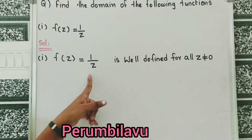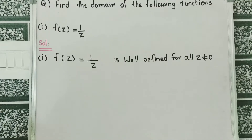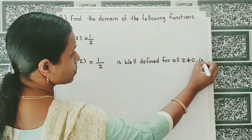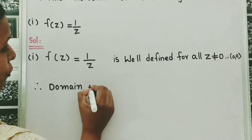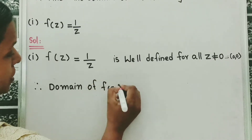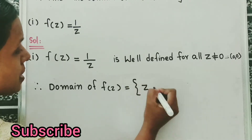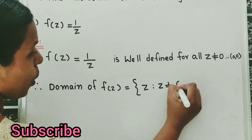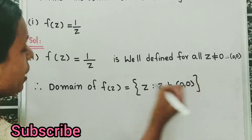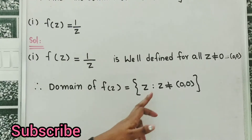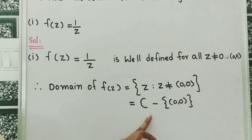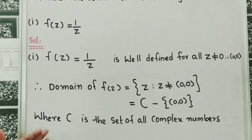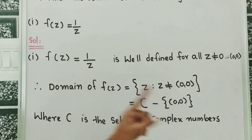If we put z equal to 0, we get 1 by 0, which is not defined. Here 0 is the ordered pair (0, 0). Therefore, the domain of f of z is equal to the set of z such that z is not equal to the ordered pair (0, 0). We can also write it as C minus the set containing ordered pair (0, 0), where C is the set of all complex numbers.